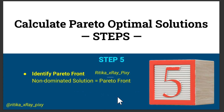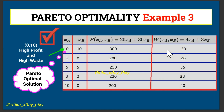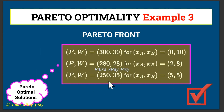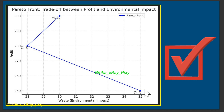Now we identify the Pareto optimal solutions. When xA = 0, xV = 10: highest profit with highest waste. When xA = 2, xV = 8: good trade-off with lower waste and still relatively high profit of 280, waste 28. When xA = 5, xV = 5: a balanced condition, neither maximizing profit nor minimizing waste to the extreme. These solutions are Pareto optimal because improving one objective — for example, reducing wastage — would result in lower profit, and increasing profit would increase waste.